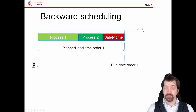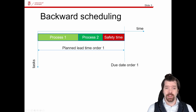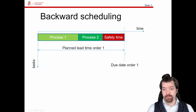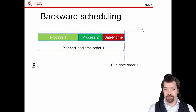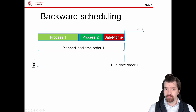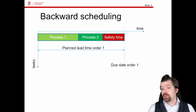We have also included a safety time — you can of course neglect that safety time and just include it in the planned lead time. In backwards scheduling, once the order has been stated by the customer, we deduct the planned lead time to identify a starting date. When this order has reached the starting date, we immediately release it to production, the two processes are executed, and then we have also introduced some safety time. The question is how to define the planned lead time to satisfy the due date. You could adjust the planned lead time to be too short — perhaps then you would have trouble not being on time.